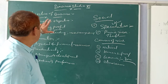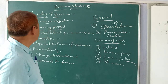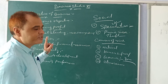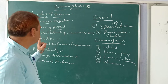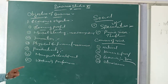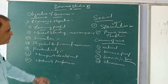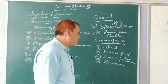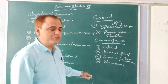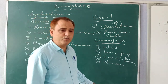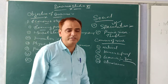In this module we have covered the objective of the business. The important objectives are: earning profit, market standing, innovation, physical and financial resources, productivity, and management and workers performance. We have also discussed the causes of risk. Please go through the book and read in more detail. Have a nice one.